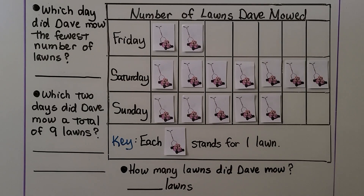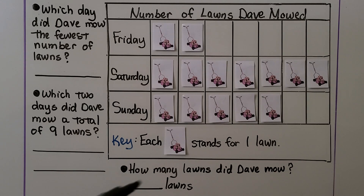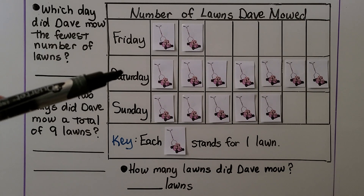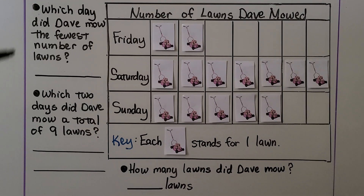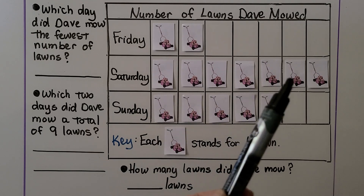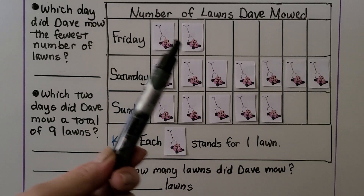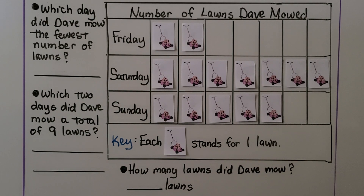Let's look at this picture graph. The title says 'Number of Lawns Dave Mowed,' and the key says that each lawnmower stands for one lawn. We can see it's Friday, Saturday, and Sunday. The question asks: which day did Dave mow the fewest number of lawns? We look for the shortest row — Friday only has two lawnmowers, so Friday would be the fewest.